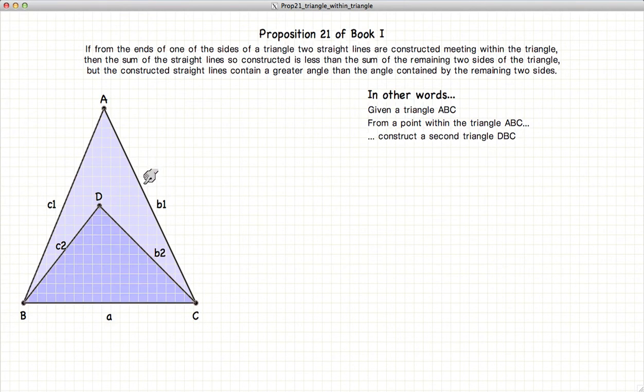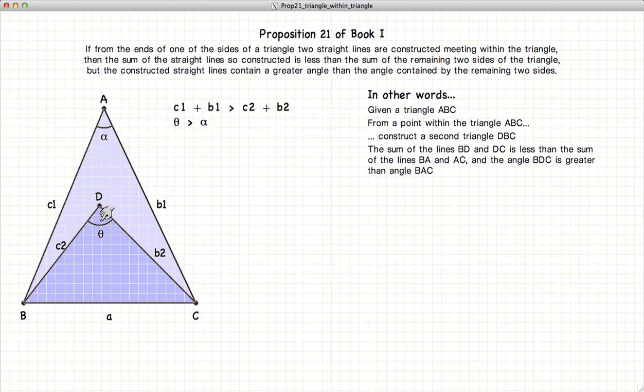If we draw a second triangle, then the sum of the lines of the outermost triangle will be larger than the sum of the lines of the innermost triangle, and also that the angle of the innermost triangle will be larger than the angle of the outer triangle. So these two things are what we're trying to demonstrate.